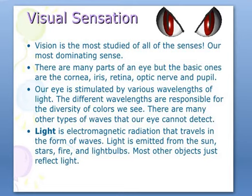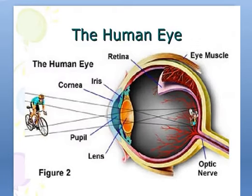Light is the electromagnetic radiation that travels in the form of waves. Light is emitted from the sun, stars, fires, and light bulbs, but most other objects just reflect light. Visual sensation starts when light enters the eyes and stimulates our visual receptors. Our eyes are sensitive to a spectrum of light with wavelengths ranging from 380 nm to 780 nm — nm meaning nanometer, which is one billionth of a meter. No sensation is registered beyond this range.